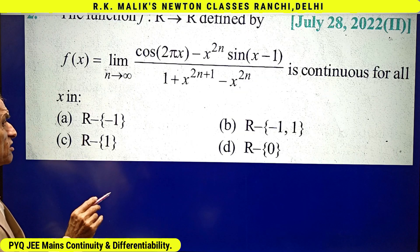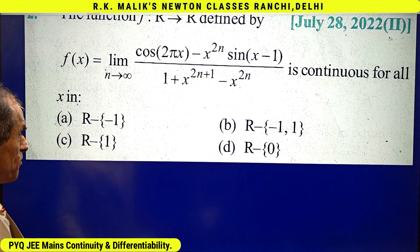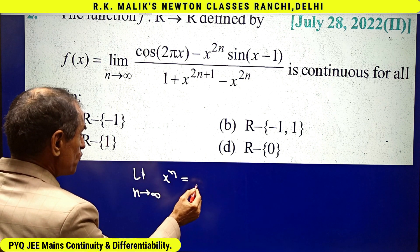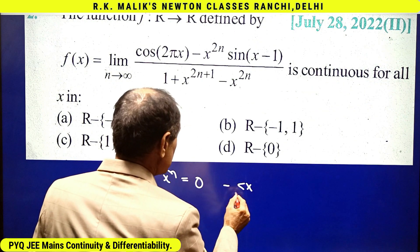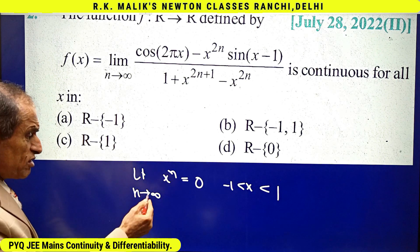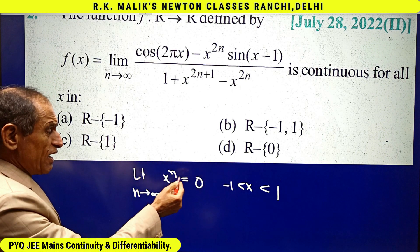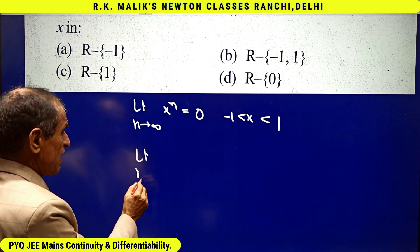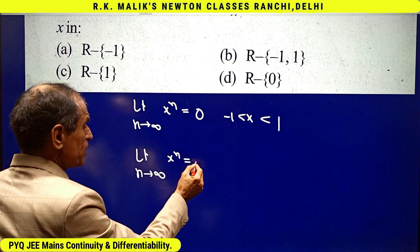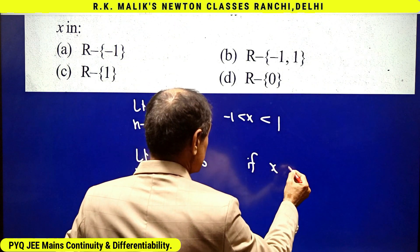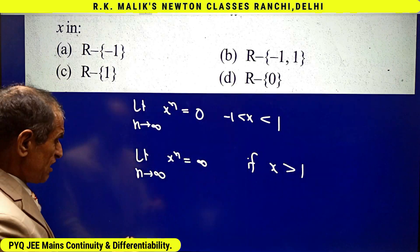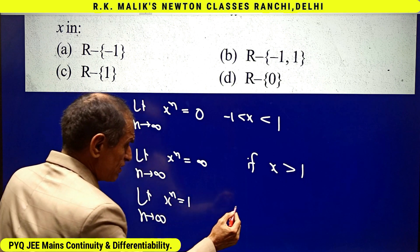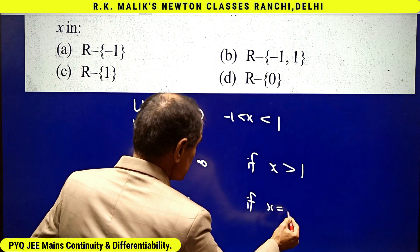We know that limit n tends to infinity of x^n is 0 if x lies between minus 1 and 1, because as the power increases the value decreases. But limit n tends to infinity of x^n is infinity if x is greater than 1, and it is 1 if x is equal to 1.